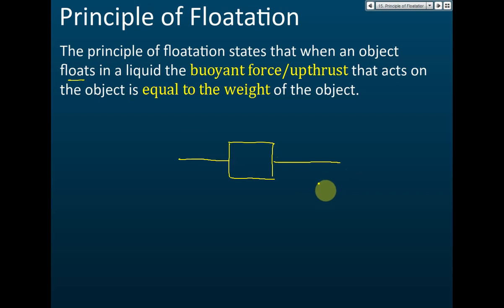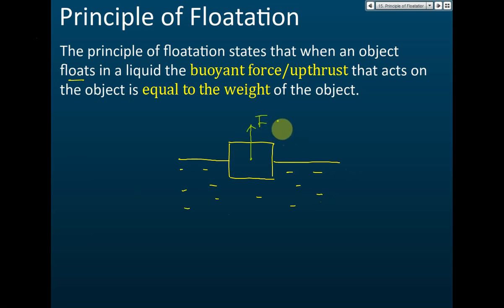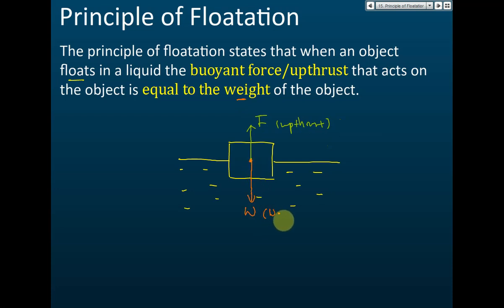A floating object experiences two forces. There is an upthrust, labelled F, acting on the object, and there is also the weight. Try to use the word 'weight' rather than 'gravity' — W is the weight, the gravitational force. These are the two forces that act on the object.